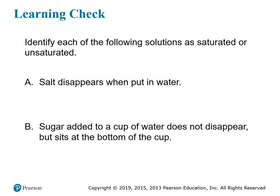Let's identify each situation as saturated or unsaturated. If you pour salt into a solution and the salt disappears as you put it into water, that's an unsaturated solution — the salt is dissolving because there's still room for it to dissolve. For B, if you add sugar to a cup of water but the sugar doesn't disappear — it just sits at the bottom even after stirring — that must be a saturated solution. You can't fit any more in, and any new solute settles to the bottom.